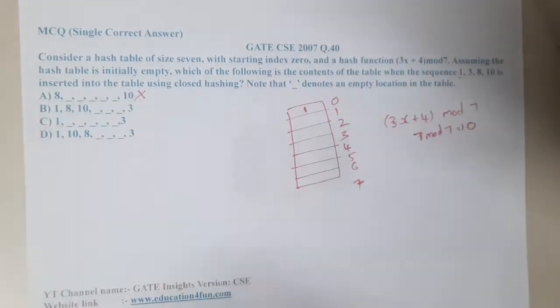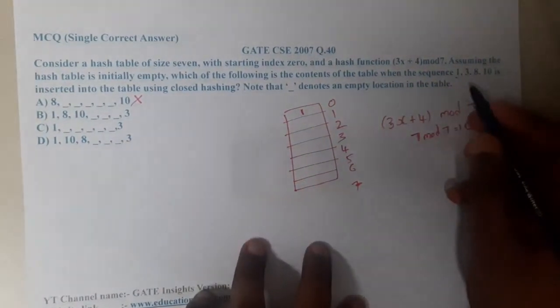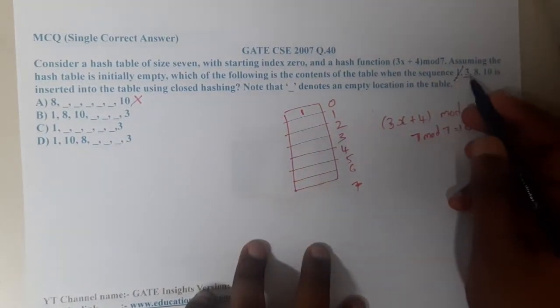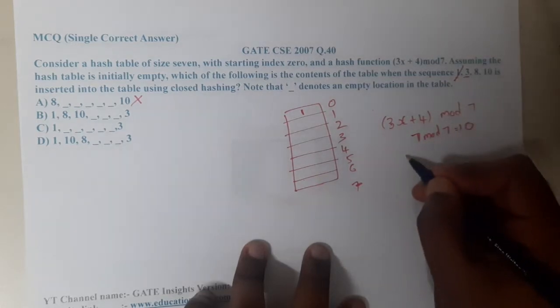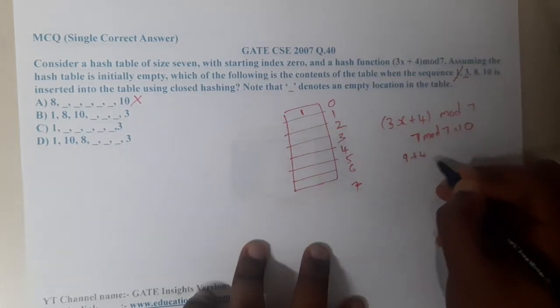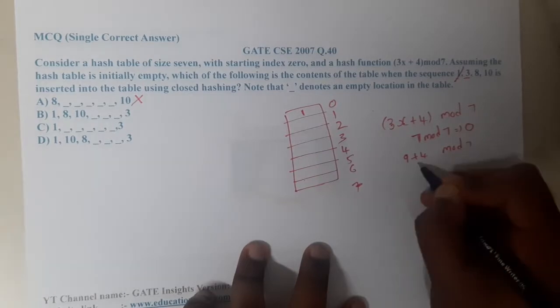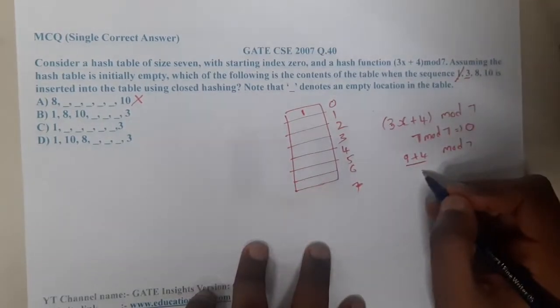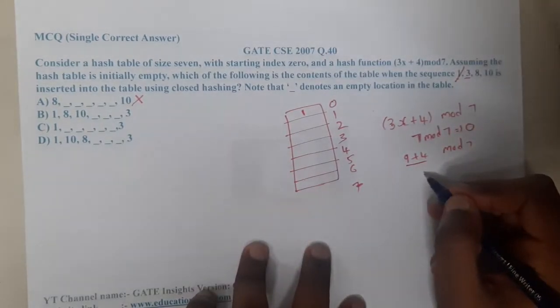Now insertion of 1 is done. Let us go to 3. 3 times 3 is 9, 9 plus 4 mod 7. The value of 9 plus 4 is 13.